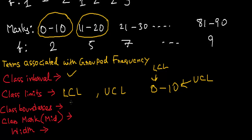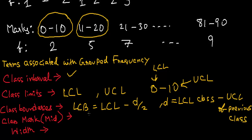Next we have class boundaries. The class boundaries of a class are defined as lower class boundary (LCB) is defined as lower class limit minus d by 2, where d is given by LCL of the class minus UCL of previous class.